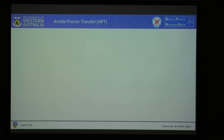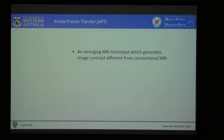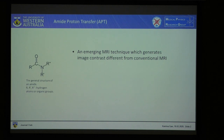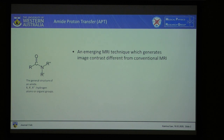I'll give a brief introduction on a few areas of research. Amide proton transfer, commonly abbreviated as APT, is an emerging MRI technique which provides different image contrast to conventional MRIs. It was first published in a scientific journal in 2003, so it's quite new. Amides are found in the backbones or side chains of proteins in our cells, in tumour cells, and are related to cellular proliferation.